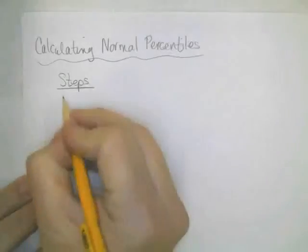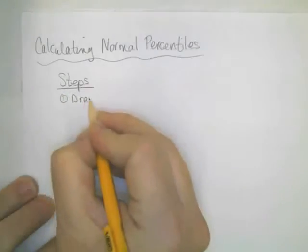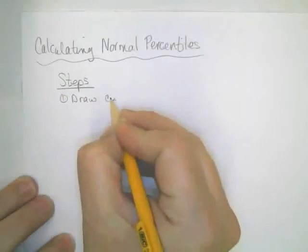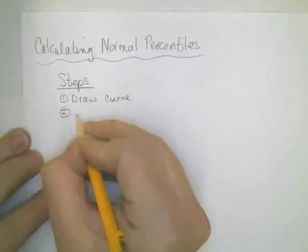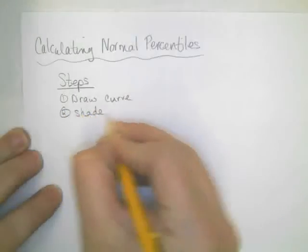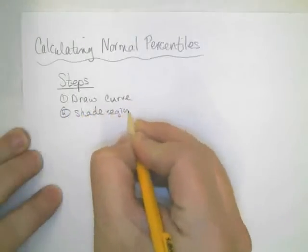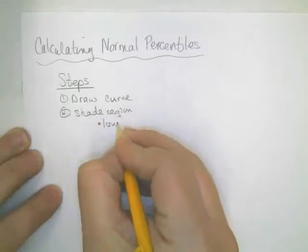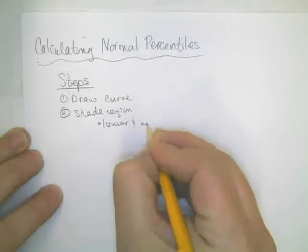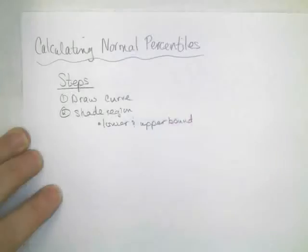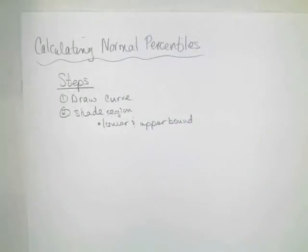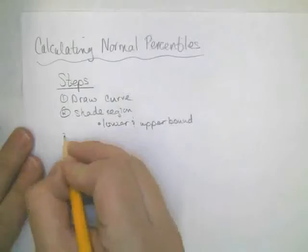The first step is to draw your curve. It is helpful to draw all the tick marks for the standard deviations, but it's not necessary. We mainly want to know what area we're going to shade. Shading a region helps us identify the lower and upper bounds, which the calculator is going to ask for. Once we know those, we can just plug it into the calculator.